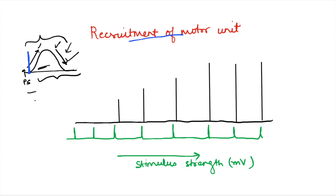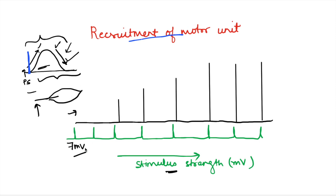Suppose we take a nerve-muscle preparation and start stimulating the nerve with minimal stimulus strength. Here the x-axis shows stimulus strength. Starting at say 5 or 7 millivolts, we initially see no contraction — the stimulus strength is not strong enough to stimulate even a single neuron, so no muscle fibers contract. We slowly increase to 7.2 mV — still no contraction — but at 7.5 mV we see a simple muscle twitch.